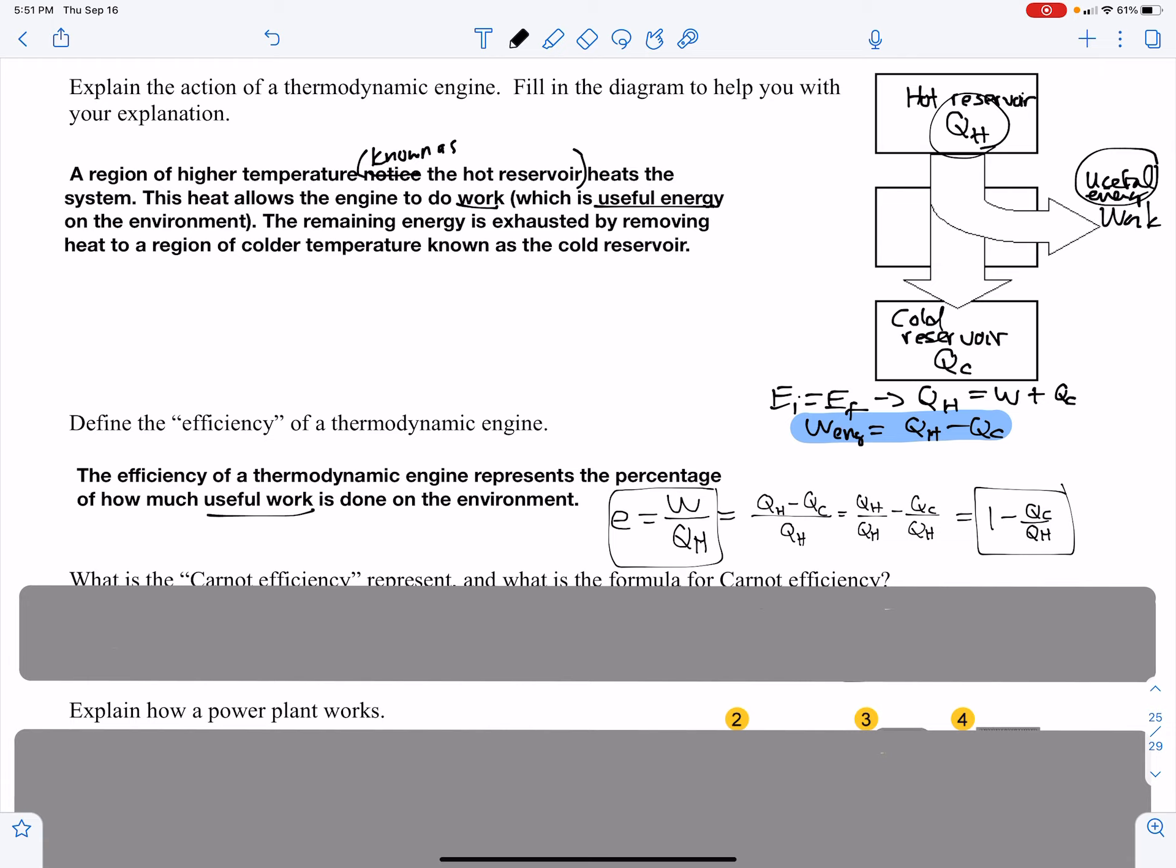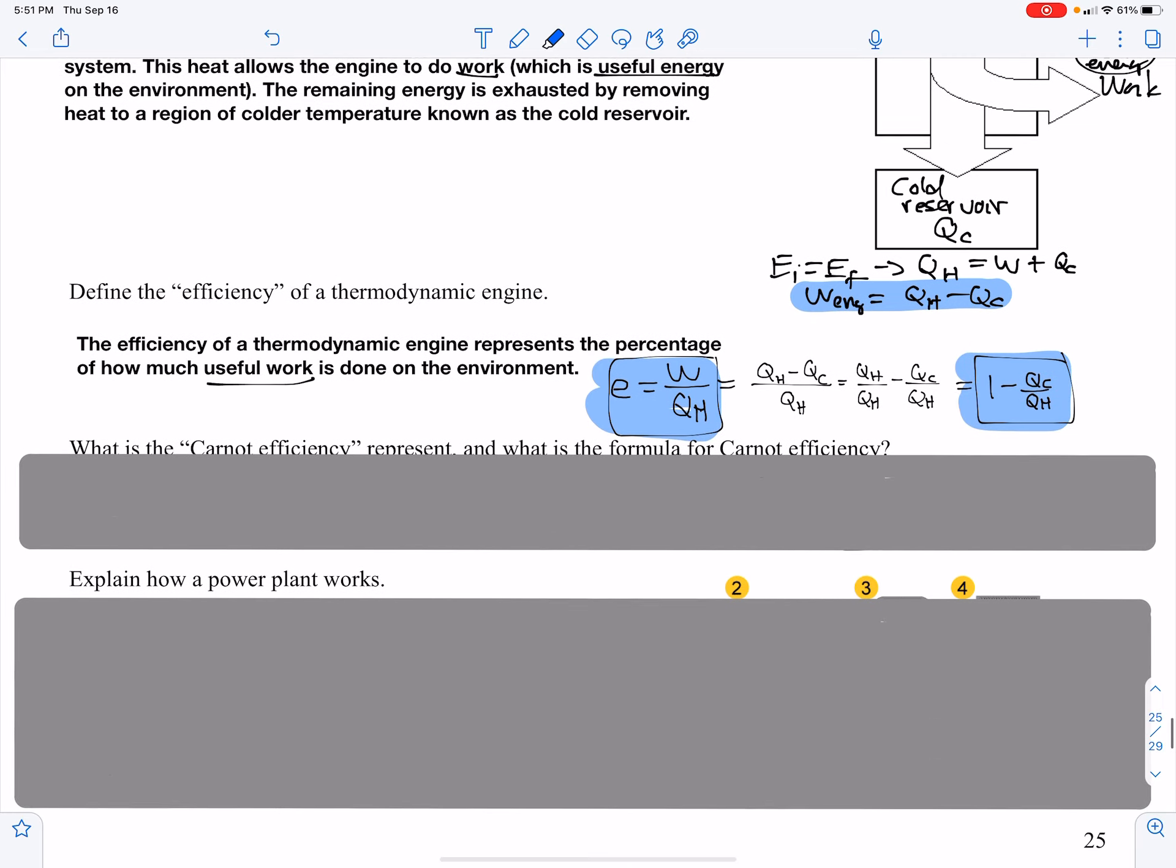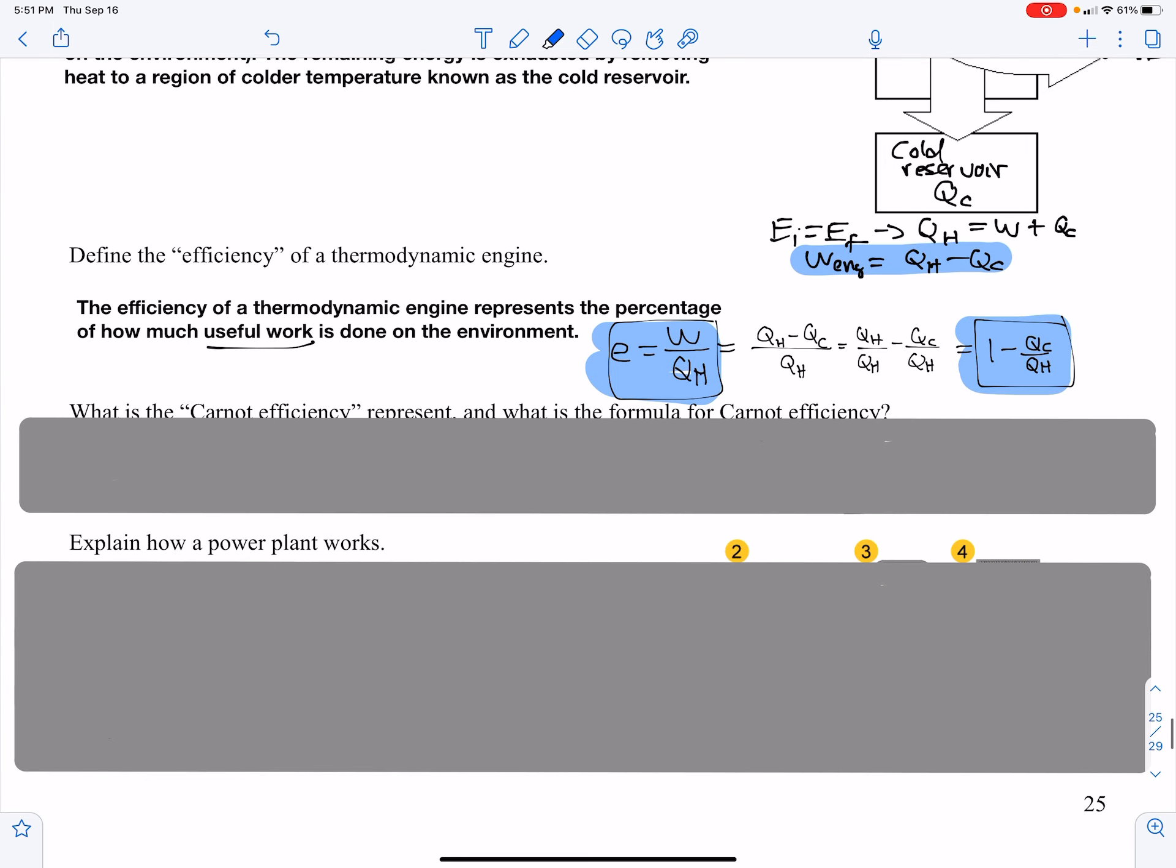Now, if we recall, work is QH minus QC over QH. We can split that up into two separate denominators. QH over QH is one minus QC over QH. So we have two different ways to calculate the efficiency or the percentage of useful energy done on the environment.